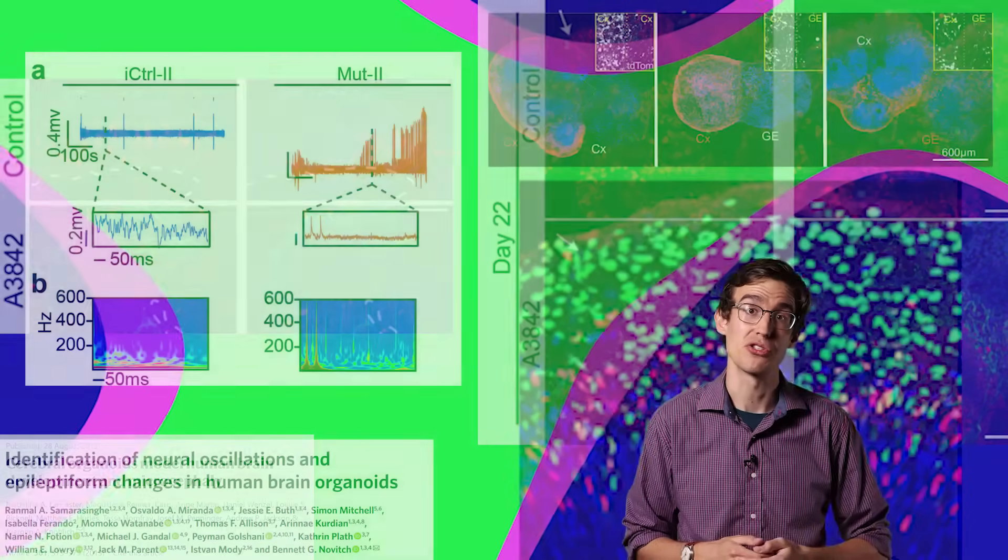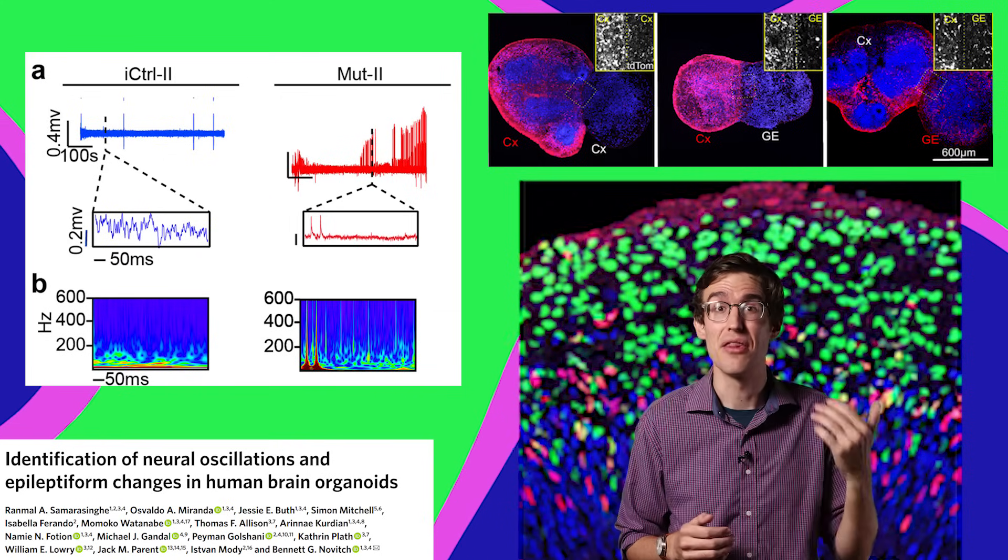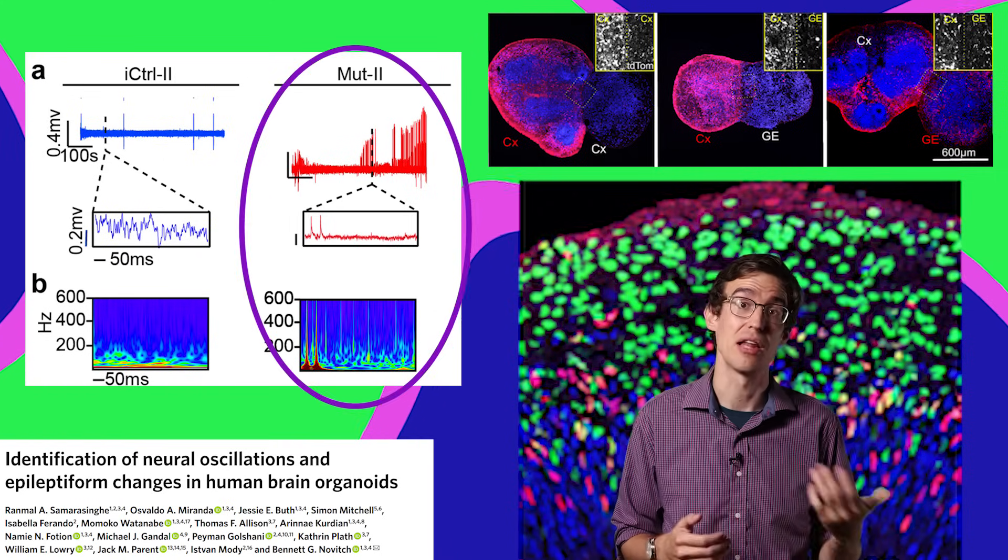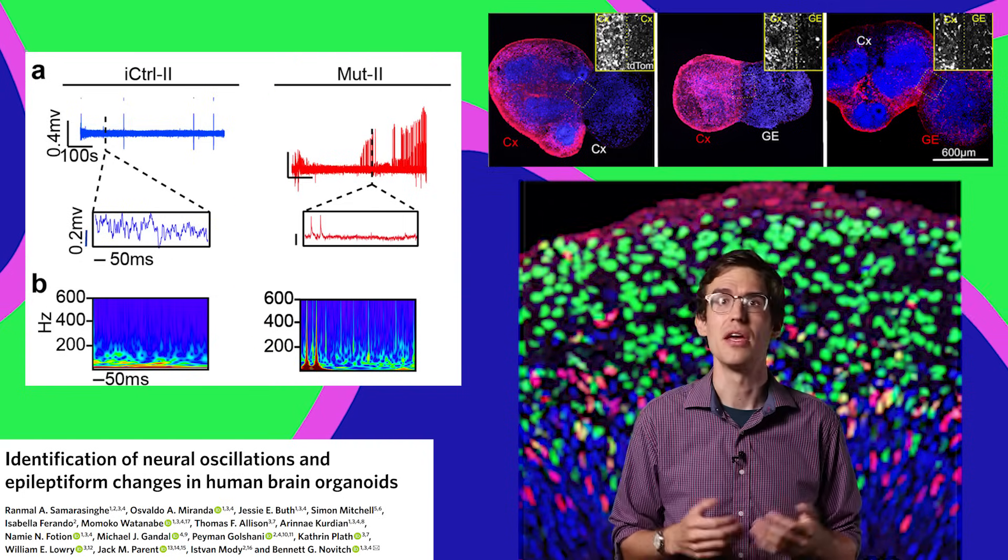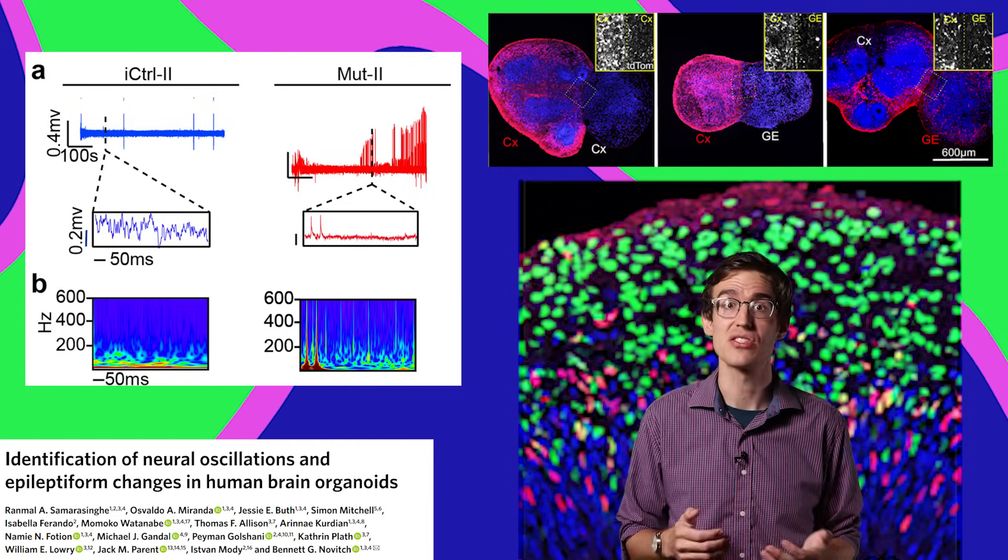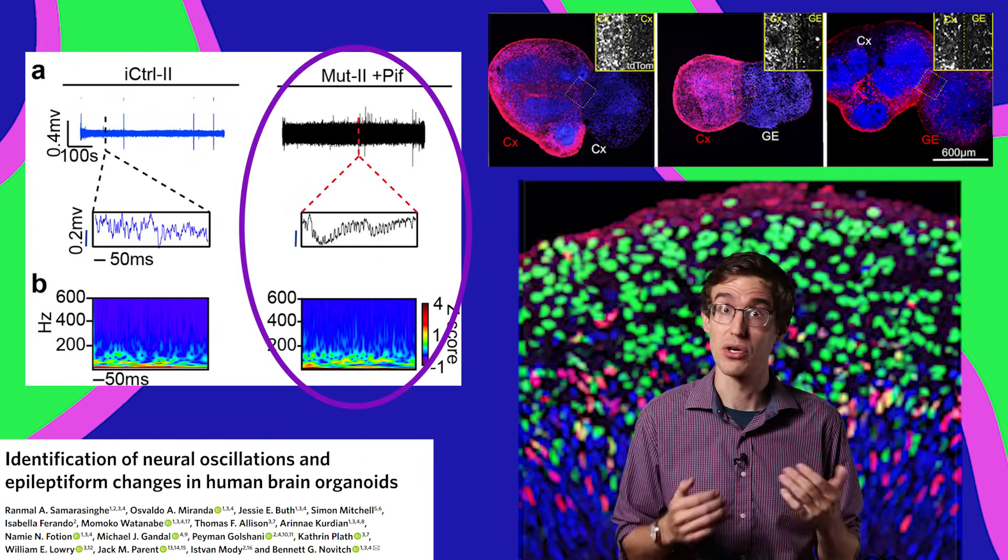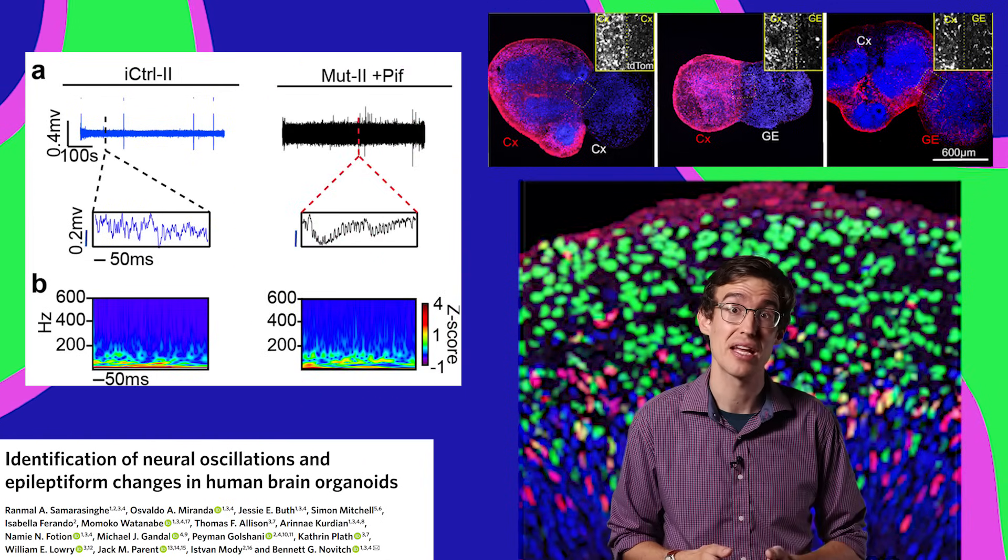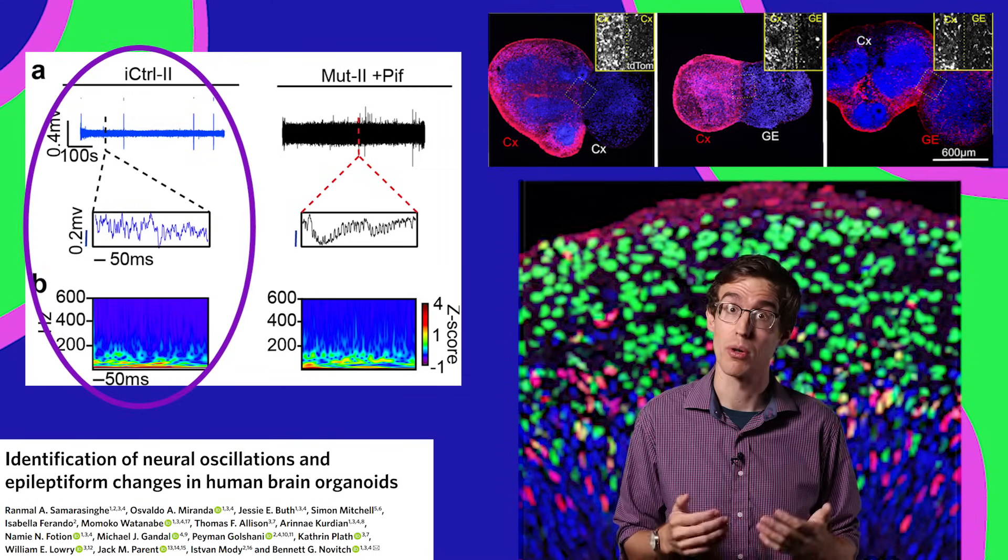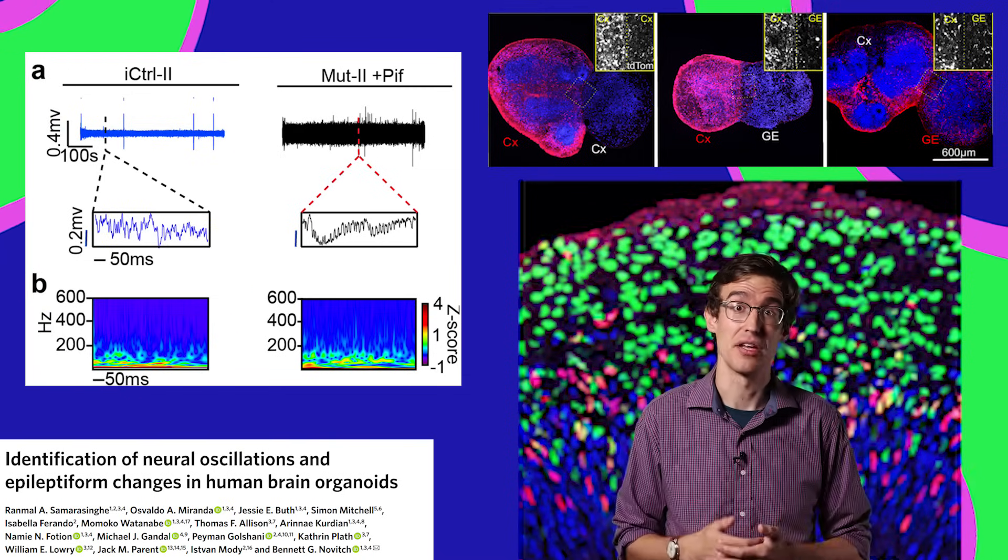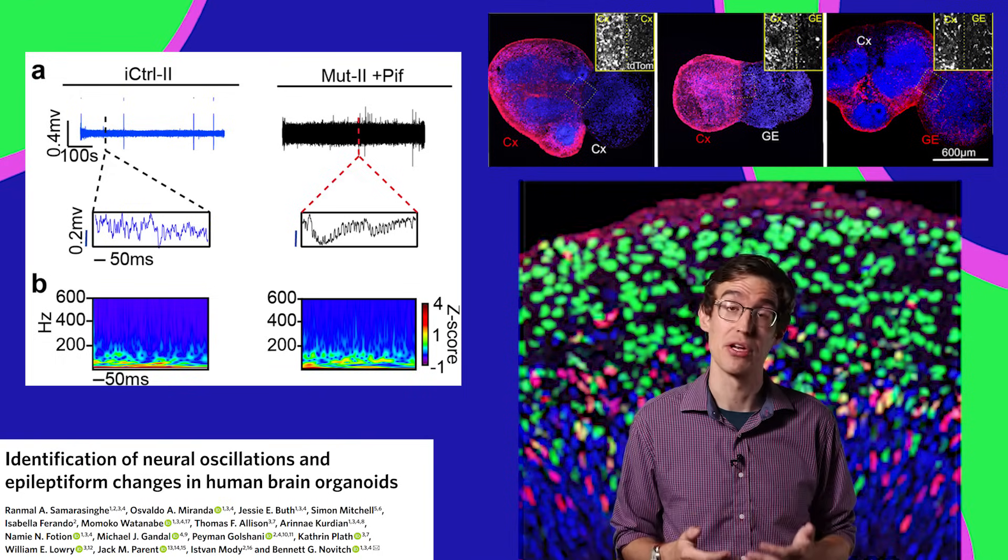Another group of researchers took cells from patients with Rett syndrome, and their mini-brains had these seizure-like spikes in electrical activity like you see in the disease. They used these mini-brain models of Rett syndrome to test an unconventional drug, and it worked. It reduced these spikes and brought their brain activity a lot closer to the normal mini-brains.